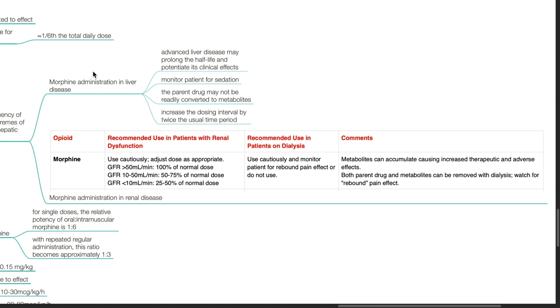In patients on dialysis, use cautiously and monitor the patient for rebound pain effect or do not use morphine. Metabolites can accumulate, causing increased therapeutic and adverse effects. Both parent drug and metabolites can be removed by dialysis. Watch out for rebound pain effect.